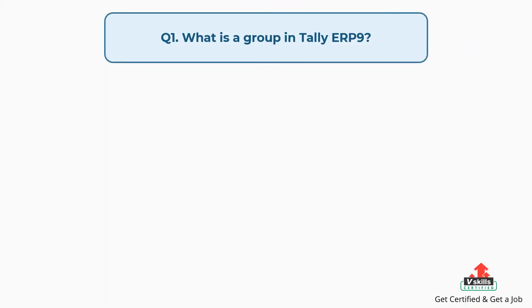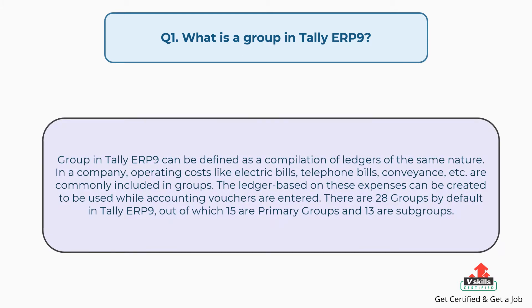Question number one: what is a group in Tally ERP9? A group in Tally ERP9 can be defined as a compilation of ledgers of the same nature. In a company, operating costs like electric bills, telephone bills, conveyance, etc., are commonly included in groups. The ledger based on these expenses can be created to be used while accounting vouchers are entered. There are 28 groups by default in Tally ERP9, out of which 15 are primary groups and 13 are subgroups.